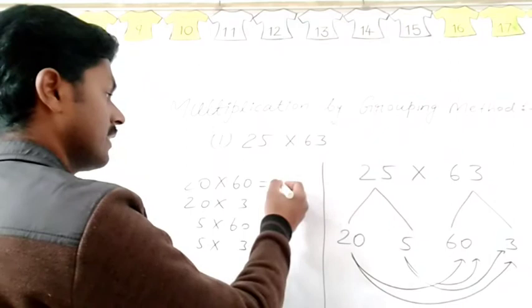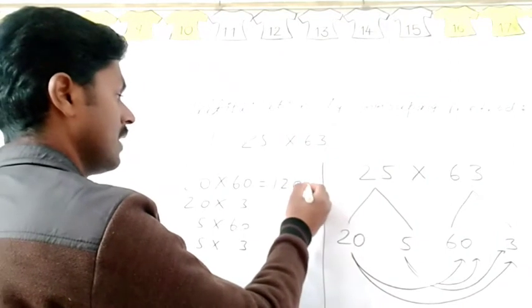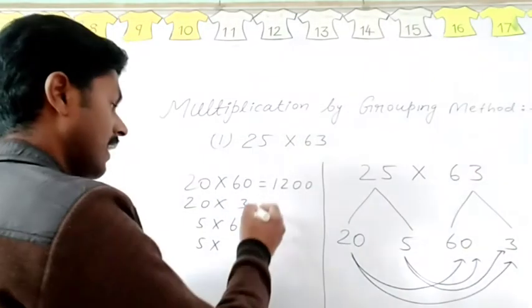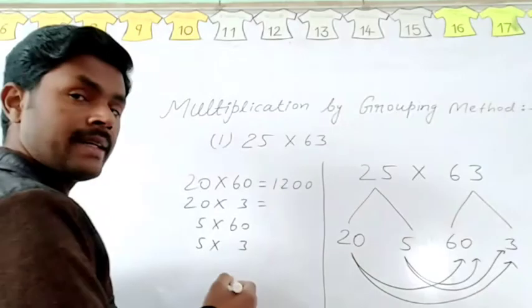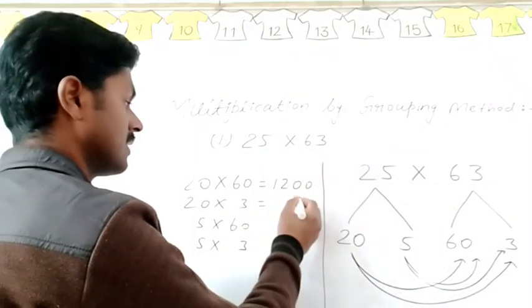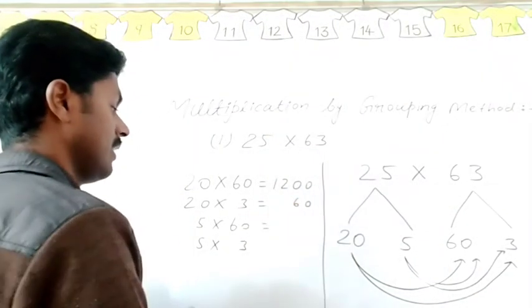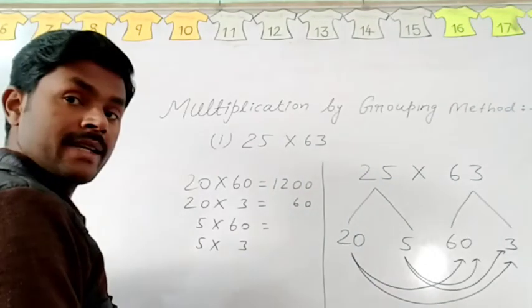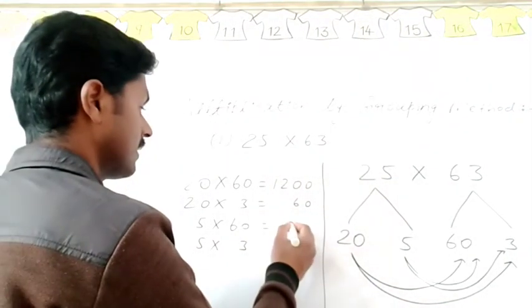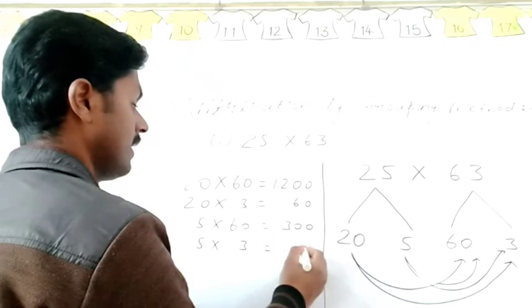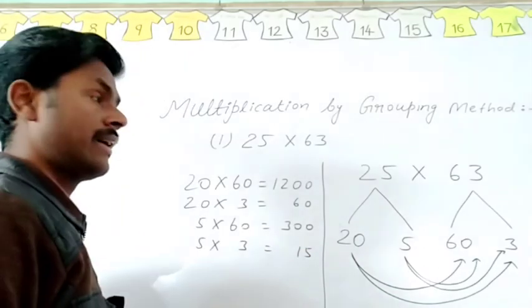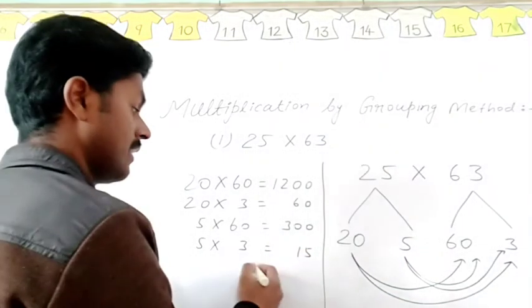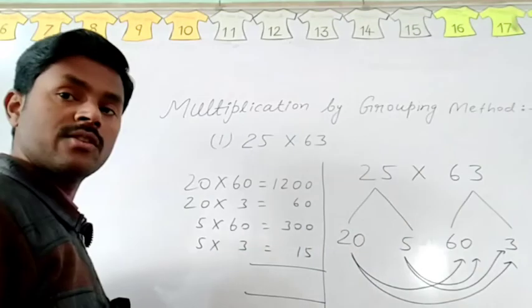When we multiply 20 and 60, it will be 1200. When we multiply 20 and 3, it will be 60. When we multiply 5 and 60, it will be 300. And when we multiply 5 and 3, it will be 15.